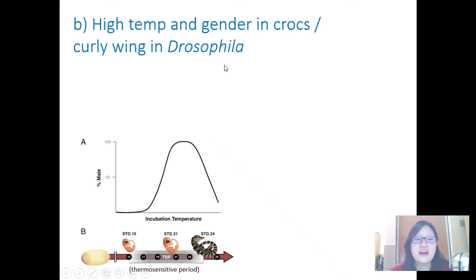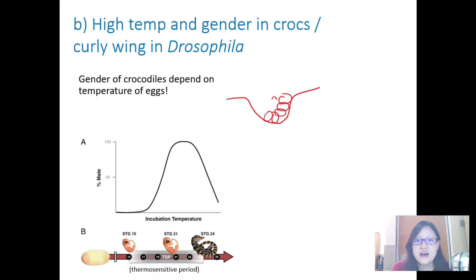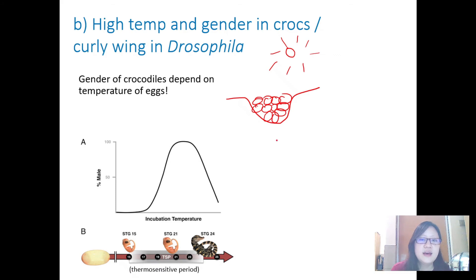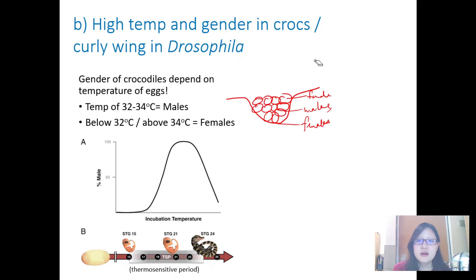High temperature can also affect gender in crocodiles. The incubation temperature of eggs determines the sex: eggs incubated at 32–34°C become males, while anything below or above that range produces females. So in a nest, the top eggs (hottest) would be female, the middle eggs would be male, and the bottom eggs (coolest) would be female.